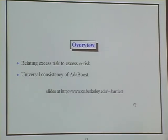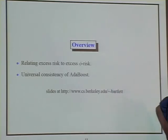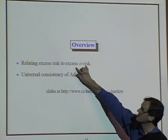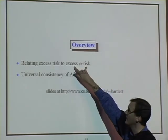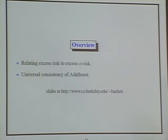The two key points are: first, we can relate the excess risk to the excess phi risk, which is what our algorithms are minimizing; and second, this is one of the key tools in showing that as the sample size grows, Adaboost — with a number of steps allowed to grow sub-linearly in the sample size — has risk that approaches the optimum asymptotically.